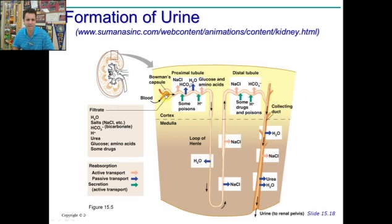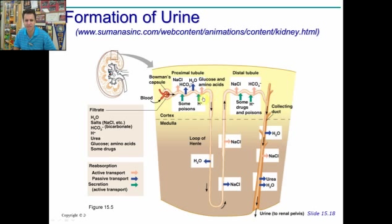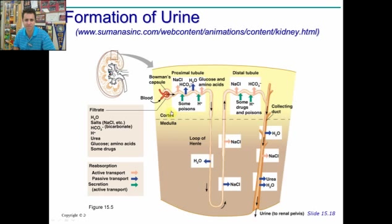Let's look at this generically. We have the glomerulus, Bowman's capsule, and the proximal convoluted tubule. The descending limb of the loop of Henle, the ascending limb, distal convoluted tubule, and the collecting duct. In the proximal convoluted tubule you see most of the reabsorption occurring — glucose, amino acids, hydrogen ions, water, bicarbonate, salt. The green indicates active transport, secreting stuff from the blood into the renal tubule. The blue is passive transport — if there's more water in the tubule than outside, water naturally flows out, same with bicarbonate. Things like salt, glucose, and amino acids are actively transported back in because they're so important to keep.